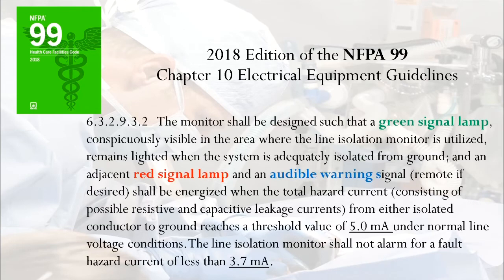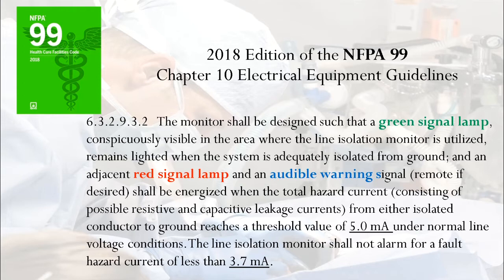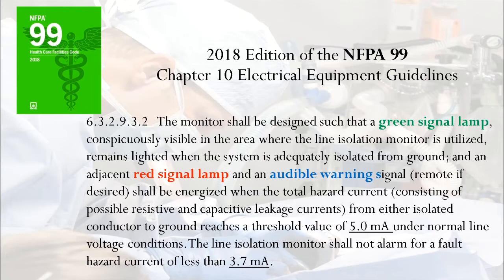In the NFPA 99 codebook, Section 6.3.2.9.3.2, talking about line isolation monitors: the monitor shall be designed such that a green signal lamp, conspicuously visible in the area where the line isolation monitor is utilized, remains lighted when the system is adequately isolated from ground, and an adjacent red signal lamp and an audible warning signal, remote if desired, shall be energized when the total hazard current — consisting of possible resistive and capacitive leakage currents from either isolated conductor to ground — reaches a threshold value of 5.0 milliamps under normal line voltage conditions. The line isolation monitor shall not alarm for a fault hazard current of less than 3.7 milliamps.